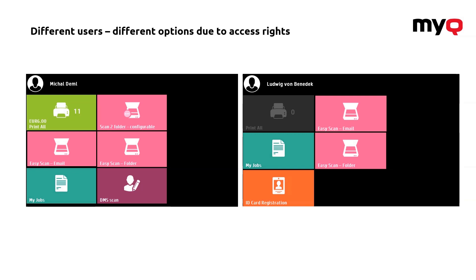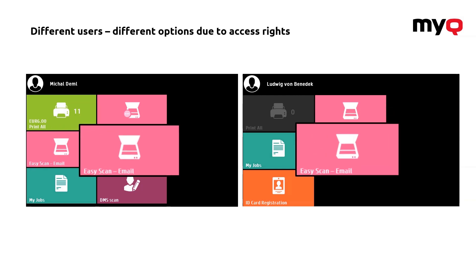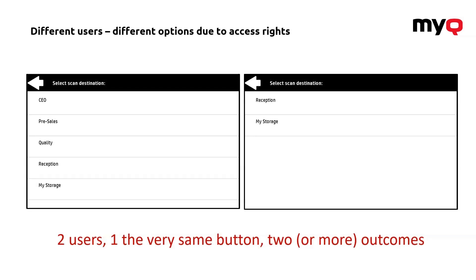The last option is also related to settings of rights, because through the settings of rights you can make sure that certain options will be available only to selected people, so even the very same button may behave differently for different departments or different users. As you will see, these two users are sharing one button, one smart workflow. But after pressing the button, there's a real difference in the outputs — the one on the left has a lot more rights and is able to scan to multiple destinations, while the user on the right does not even know those destinations exist and is only presented with fewer options. That way, the very same workflow can have different outputs.